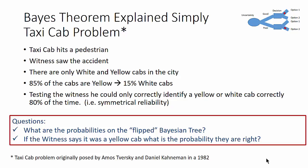There's a problem called the taxicab problem where a taxicab has hit a pedestrian and a witness saw the accident. There are only white and yellow cabs in the city. 85% of the cabs are yellow which implies that 15% of the cabs are white. When the police tested the witness they could only correctly identify a yellow or a white cab correctly 80% of the time. So it's a symmetrical reliability.